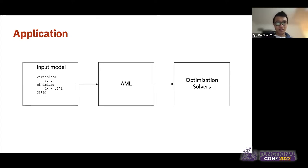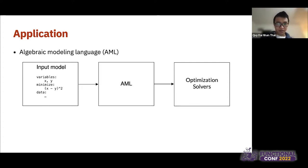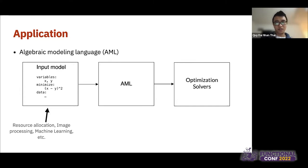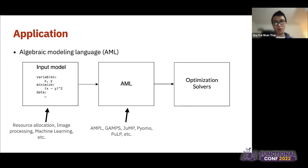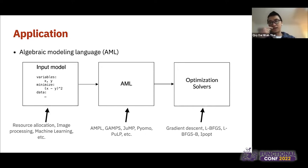When we talk about applications of optimization, it usually revolves around an algebraic modeling language — AML. We have the input models: the optimization problems we want to solve, which can be in image processing, machine learning. You describe your model in the algebraic modeling language. And then there's the optimization solvers — someone wrote a very good optimization solver that can take your formulation and optimize it with numerical methods.